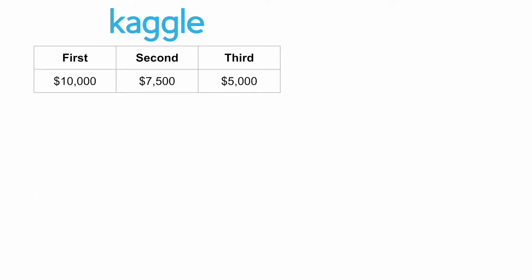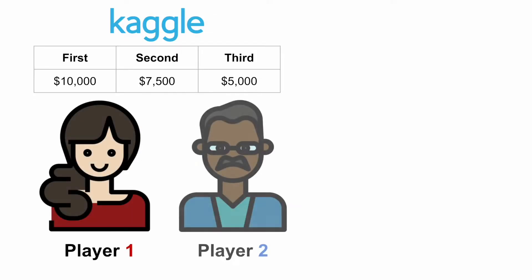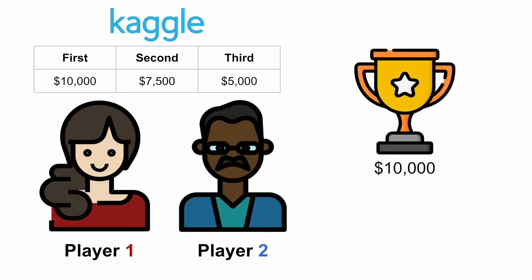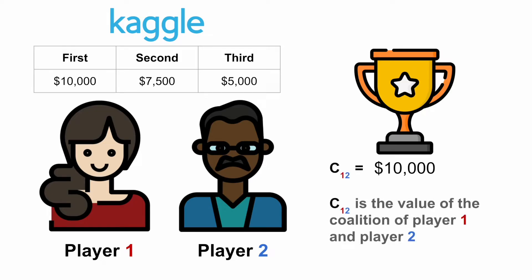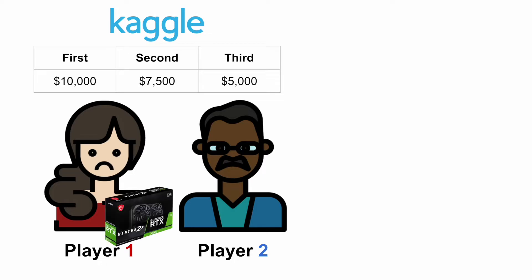Let's get started. Suppose you and a friend enter a Kaggle contest and end up winning the first prize of ten thousand dollars. We call this a coalition value — the value of the coalition, or team, of player one and player two is ten thousand dollars. Now you want to split the money fairly. Your friend suggests simply splitting it equally so you each get five thousand dollars, but you are not happy with this. All the model training was done using your GPU, so you believe you deserve a larger share.